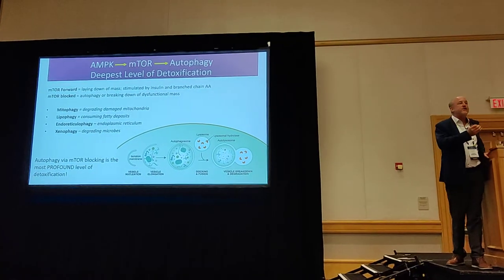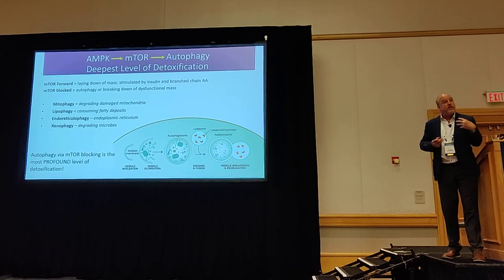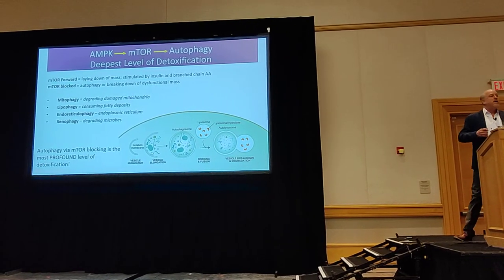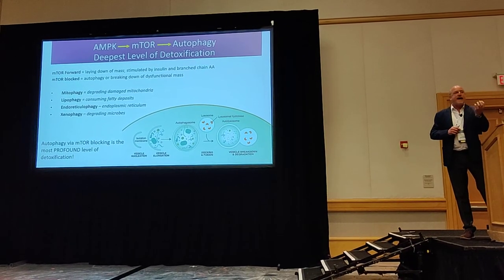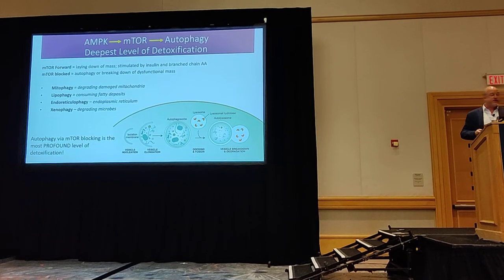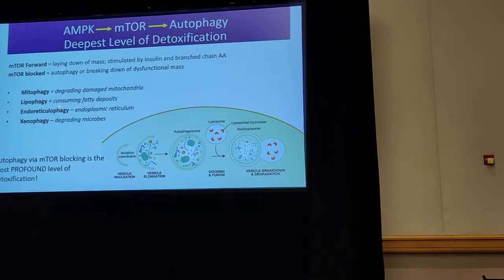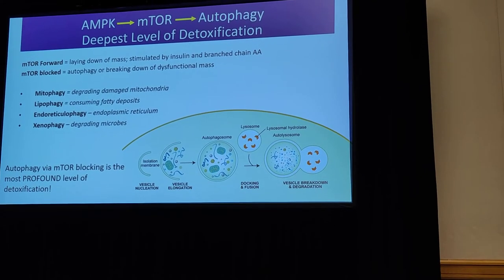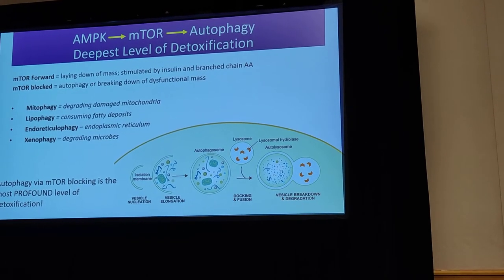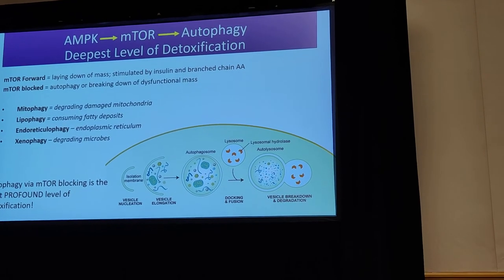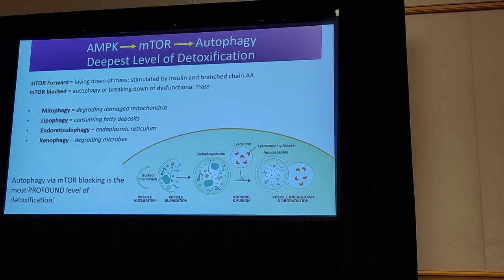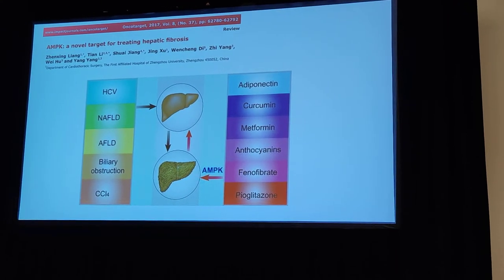Autophagy through mTOR blocking is the deepest level of detoxification — we're taking whole organelles or whole cells, putting them into an autophagy zone and digesting them to their primary components. During fasting, this activates lipolysis and takes damaged proteins, recycling them back into amino acids. Damaged membranes on organelles accumulate tags which are called into the autophagy zone — a damaged mitochondria will be digested, not a healthy one. There's also lipophagy, reticulophagy, and xenophagy — which digests viruses, bacteria, and parasites.